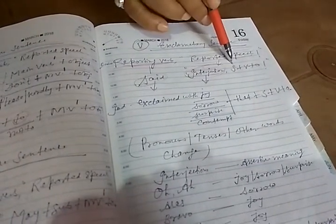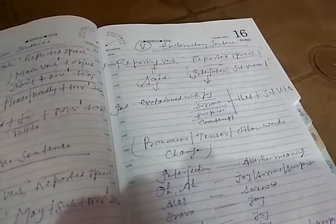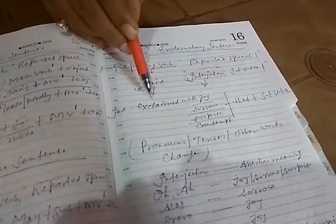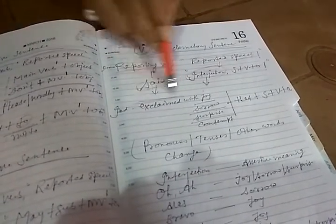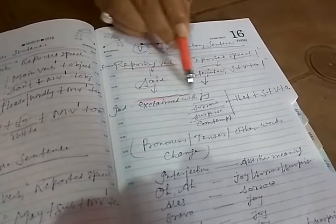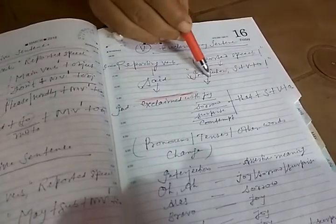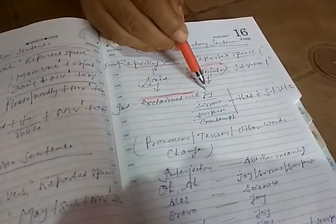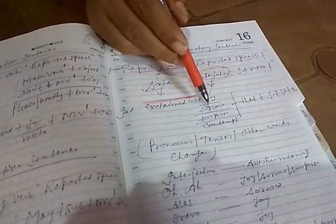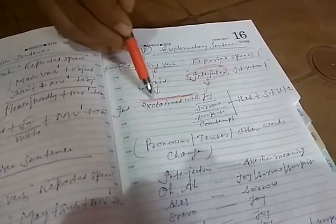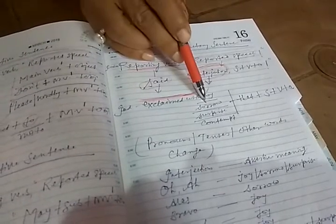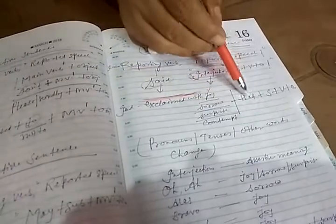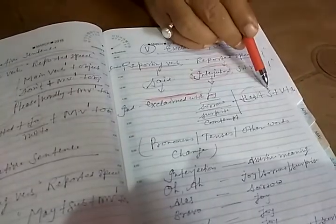How can you change it? The word 'said' will be changed to 'exclaimed.' See here — 'exclaimed with.' Then, according to the interjection and its meaning, you will put either joy, sorrow, surprise, or contempt — meaning exclaimed with joy, exclaimed with sorrow, exclaimed with surprise, or exclaimed with contempt. Then again, conjunction 'that,' and then Subject, Verb, Object. Pronouns, tenses, and other words will be changed.